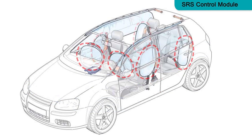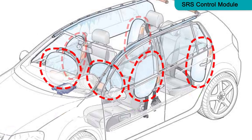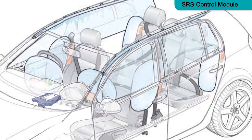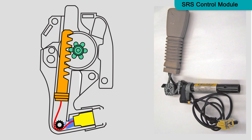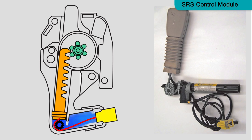The module will only deploy the airbags and pretensioners if it detects a collision of sufficient force. If the force of the impact is not sufficient to warrant airbag deployment, the control module may deploy the seatbelt pretensioners only.